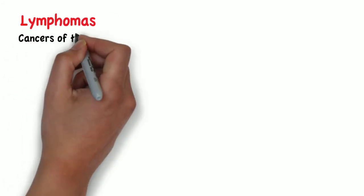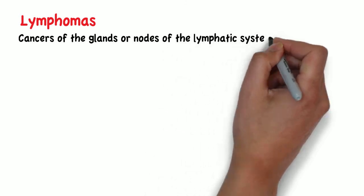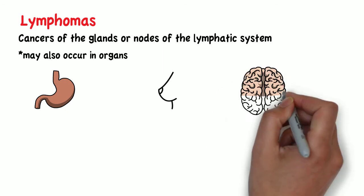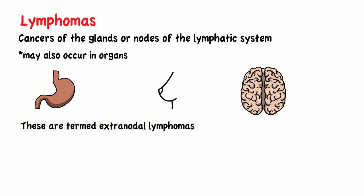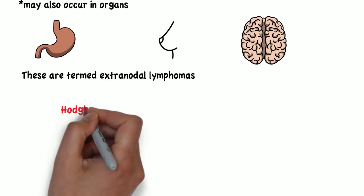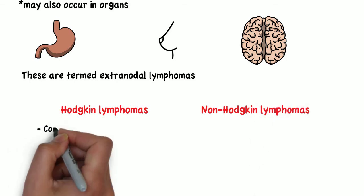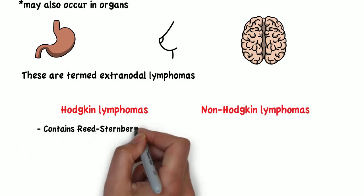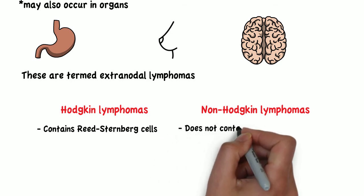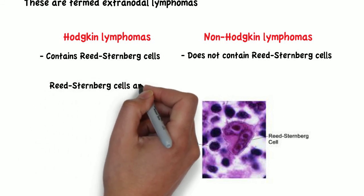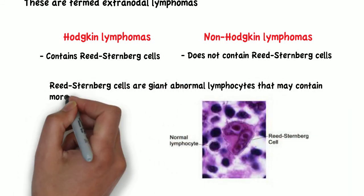Next, we have lymphomas, which are cancers of the glands or nodes of the lymphatic system. However, lymphomas may also occur in organs like the stomach, breast, or the brain — these are termed extranodal lymphomas. Lymphomas are classified into Hodgkin lymphomas and non-Hodgkin lymphomas. The presence of Reed-Sternberg cells is what differentiates a Hodgkin lymphoma from a non-Hodgkin lymphoma. Reed-Sternberg cells are giant abnormal lymphocytes that may contain more than one nucleus.